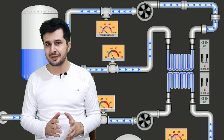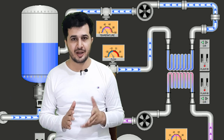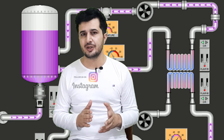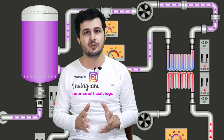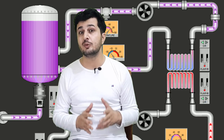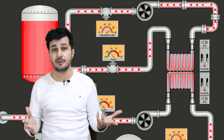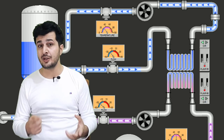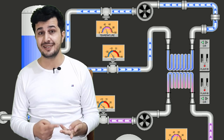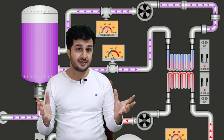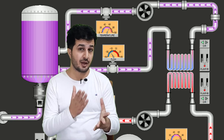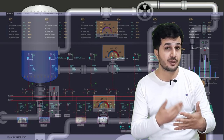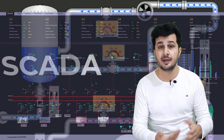Hi everyone, welcome to another session on IT and Automation Academy's YouTube channel. This is a very important video for those who want to learn automation. In this video, we are going to talk about when to use PLC, DCS, and SCADA — what scenarios require PLCs, what process requirements would require SCADA, and what conditions might require a DCS system.